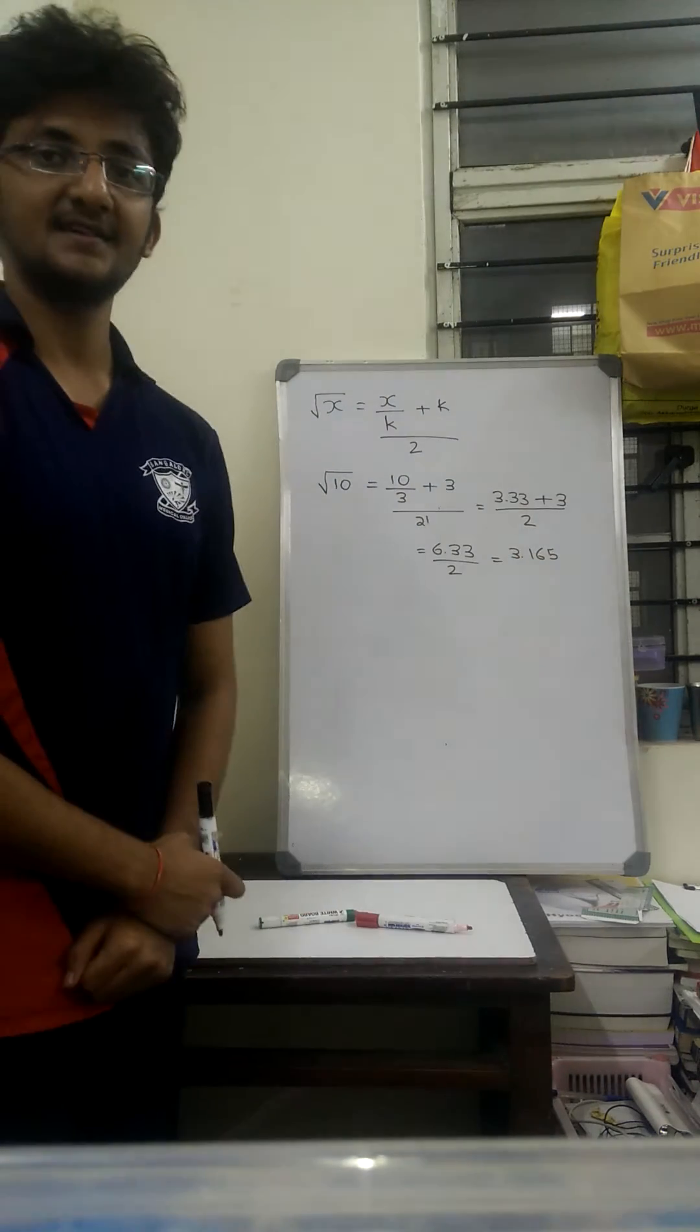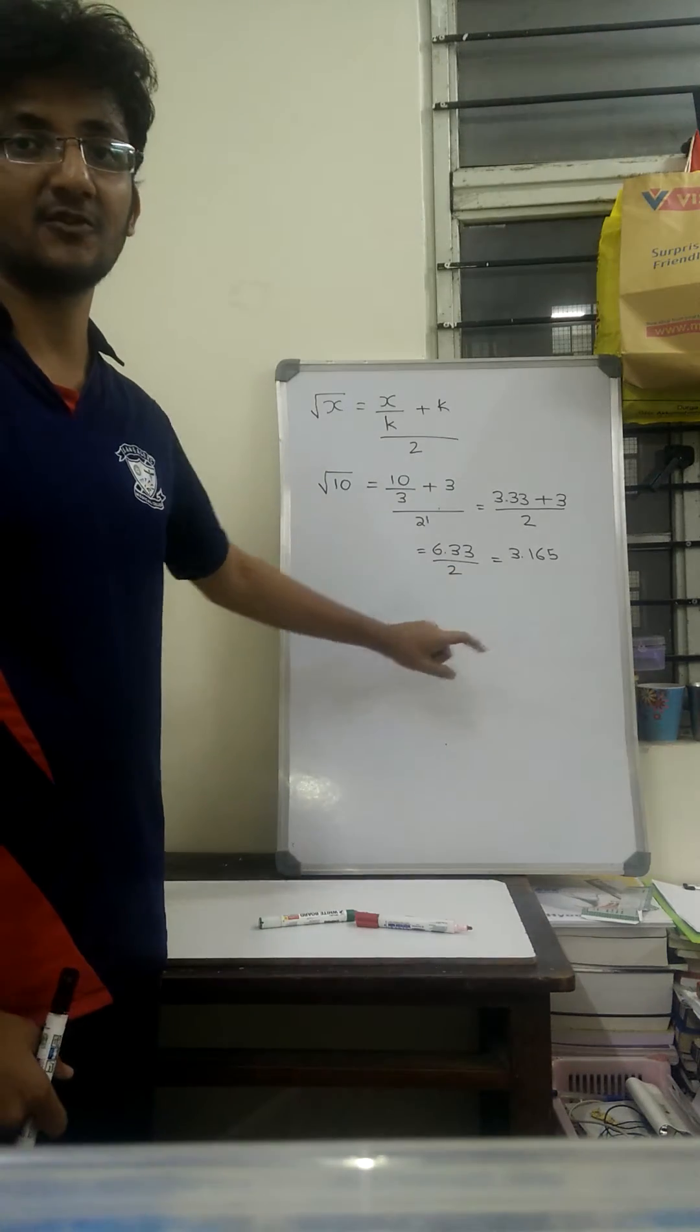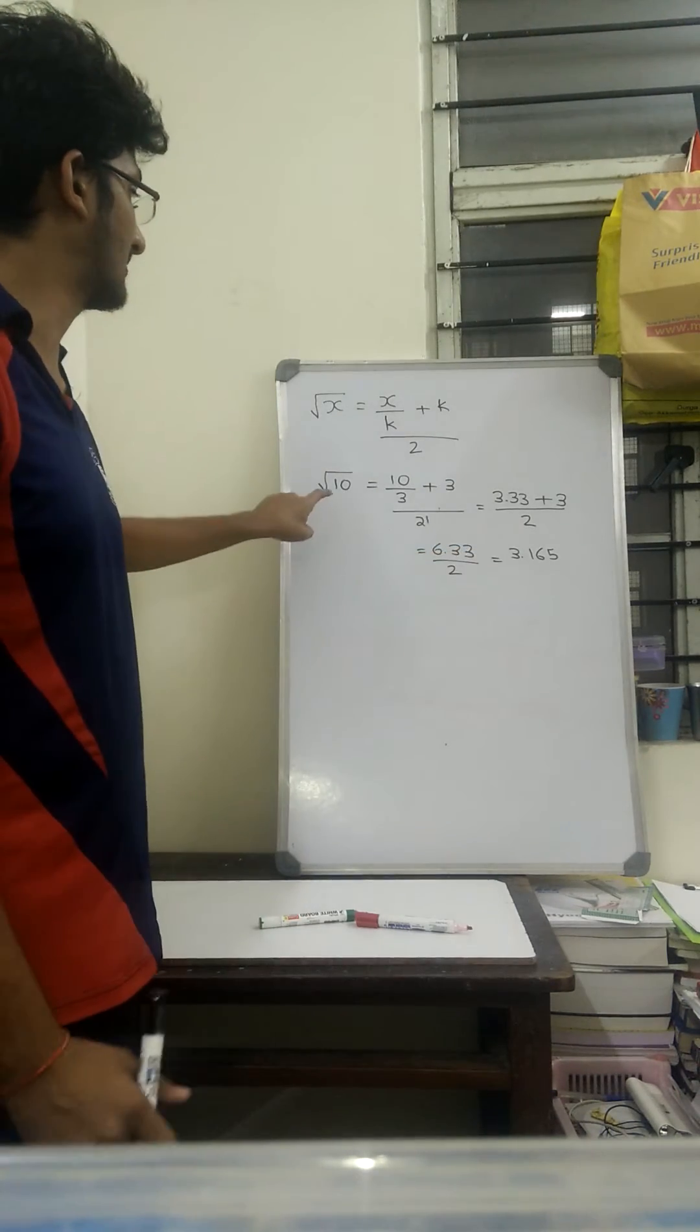The actual value of square root of 10 is 3.162 but which is very near to 3.165 and for all practical purposes we can use 3.165 as square root of 10.